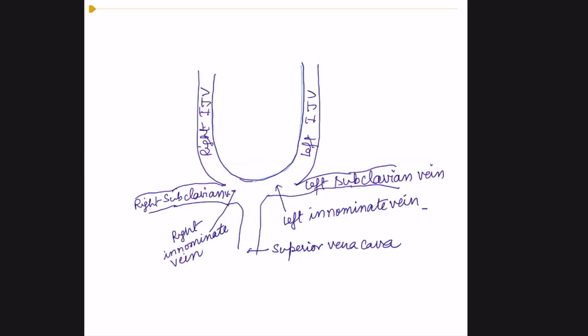This is a schematic diagram of subclavian anatomy. The subclavian vein is a deep vein and is very commonly used for CVP line insertion. The subclavian vein is a continuation of the axillary vein, and at the level of the sternal notch, the subclavian vein meets the IJV and forms the right innominate vein, or brachiocephalic vein. The brachiocephalic veins continue into the superior vena cava, which ultimately drains into the right atrium.